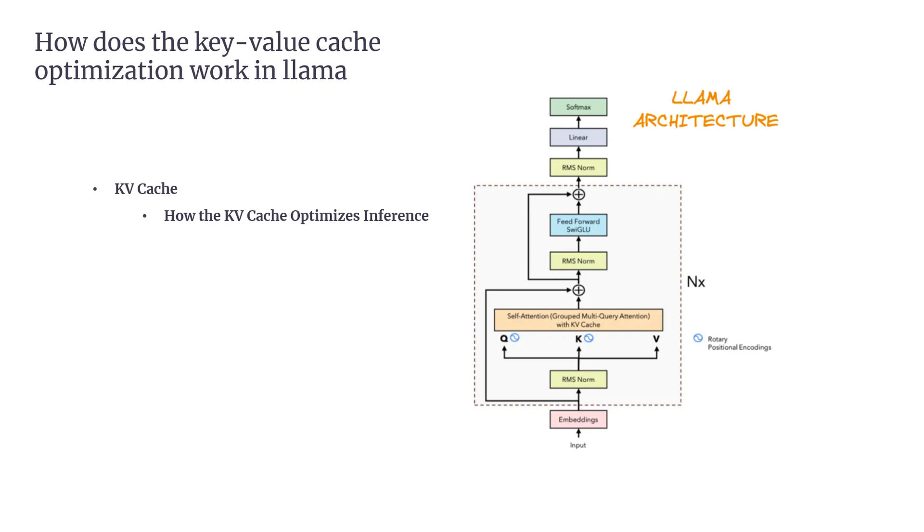Then, let's discuss how the KV Cache optimizes inference. Initial iteration: when the model starts generating tokens, it computes key and value vectors for all the input tokens and stores them in the cache. Then, subsequent iterations: for each new token, the model computes key and value vectors only for the new token. The vectors for previous tokens are retrieved from the cache. The new and cached vectors are combined for the attention calculation. After cache update, the newly computed key and value vectors are added to the cache for future use.